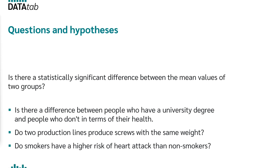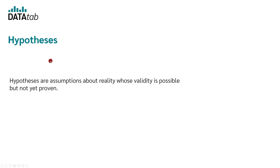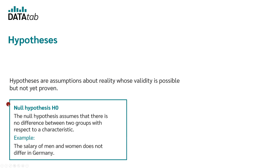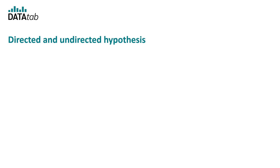In order to calculate an independent t-test, hypotheses must first be derived from the research question. Hypotheses are assumptions about reality whose validity is possible but not yet proven. There are always two hypotheses: the null hypothesis and the alternative hypothesis. The null hypothesis assumes that there is no difference between two groups with respect to a certain characteristic — for example, the salary of men and women does not differ in Germany. The alternative hypothesis assumes that there is a difference — for example, the salary of men and women does differ in Germany.